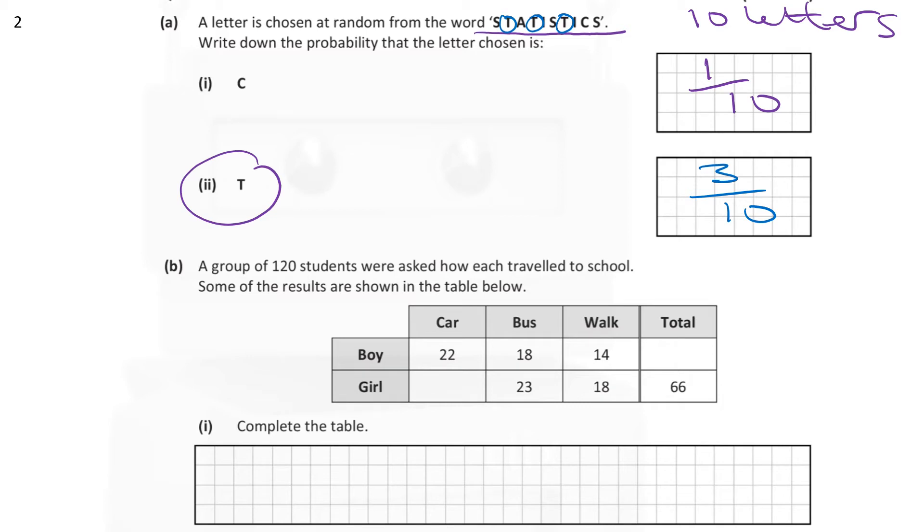Part B. A group of 120 students were asked how each travelled to school. Some of the results are shown in the table. So we can see that boys, for example, 22 travelled by car, 18 by bus and 14 walked. So therefore, the total of boys are the sum of those numbers, which is equal to 54.